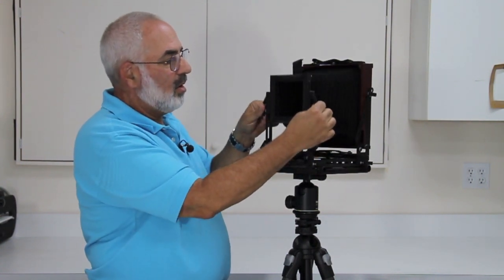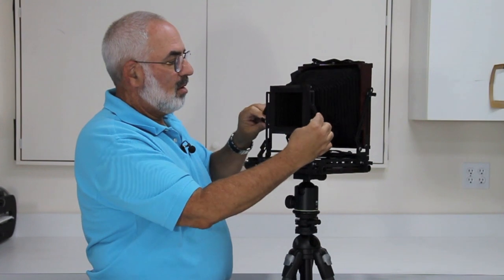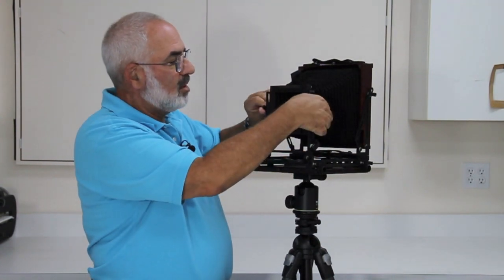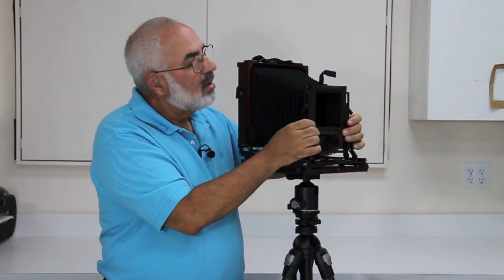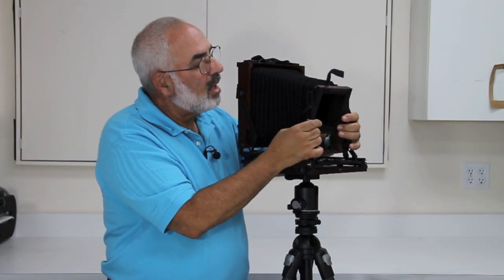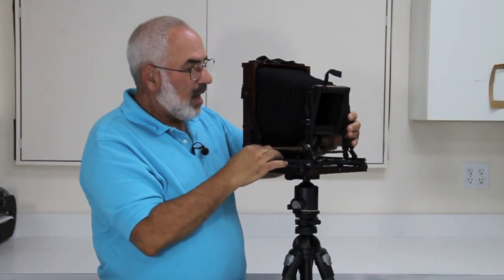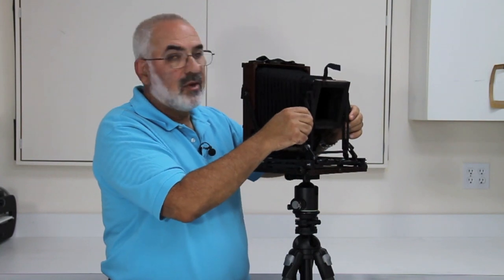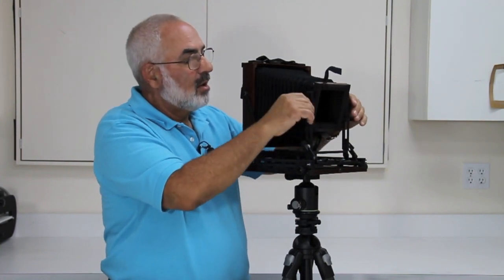And again you've got your rise and fall. And you've got your axis tilt here which is quite convenient. So you could tilt it and then lock it down, and you could still do rise and fall if you decide to change your composition a little bit. Let's set it back to neutral.